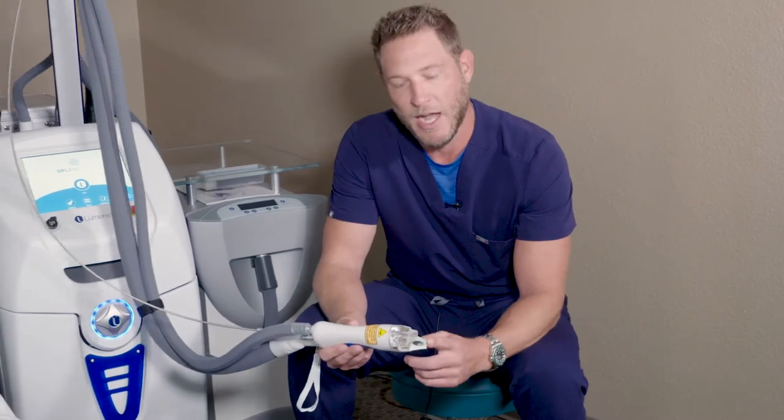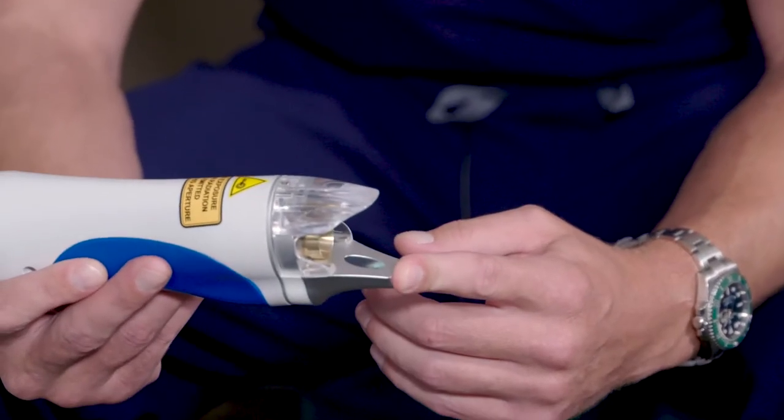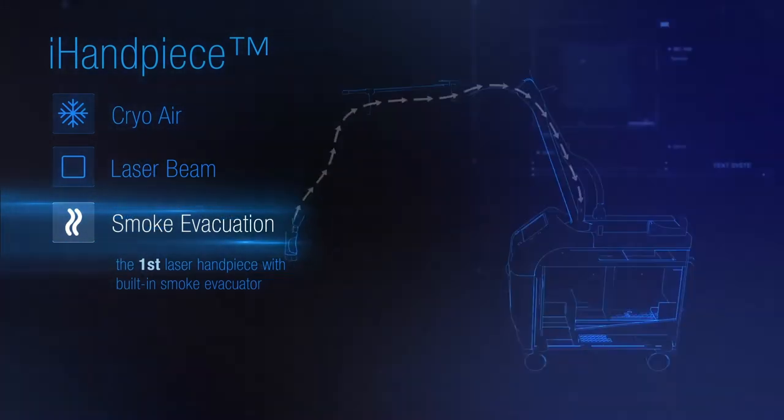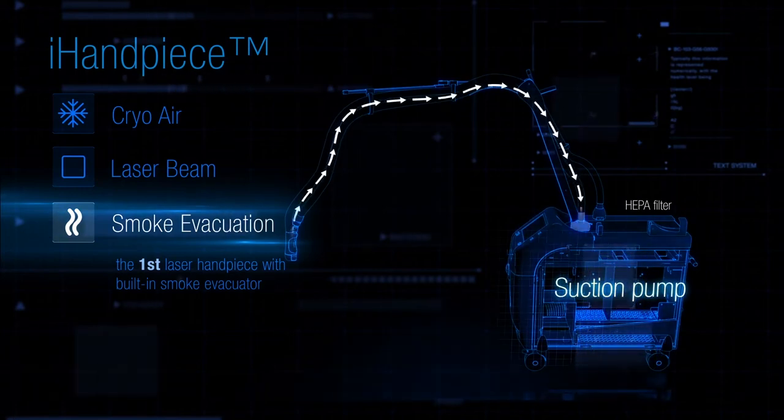The Splendor X has contact cooling and air cooling to keep the treatment very comfortable. It also has a smoke plume evacuator to suck up any of the extra plume in the room, keeping the treatment extremely safe.